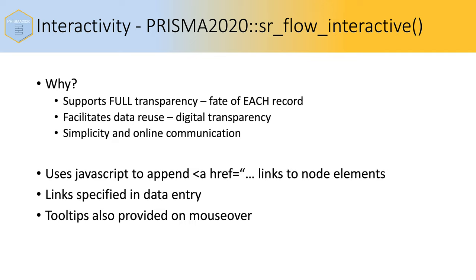The interactivity uses JavaScript by appending href links into node elements. Those links are specified in the data entry. Tooltips are provided so that when the mouse hovers over a box, a bit more information pops up. So there are two levels of interactivity: information provided in the tooltips, and then information provided in whichever source you link to.